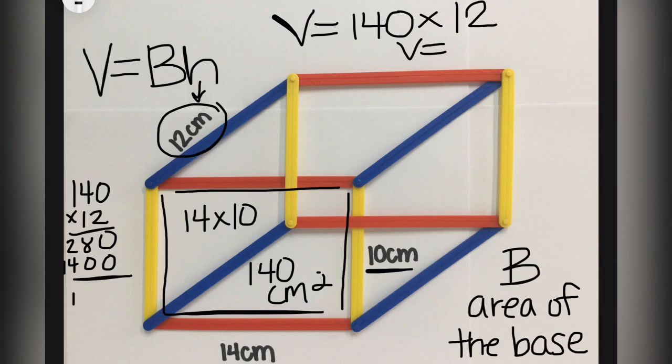Slightly running out of room, but still able to add it together. And we see that the volume is 1680 centimeters cubed. Again, there's our three-dimensional shape.